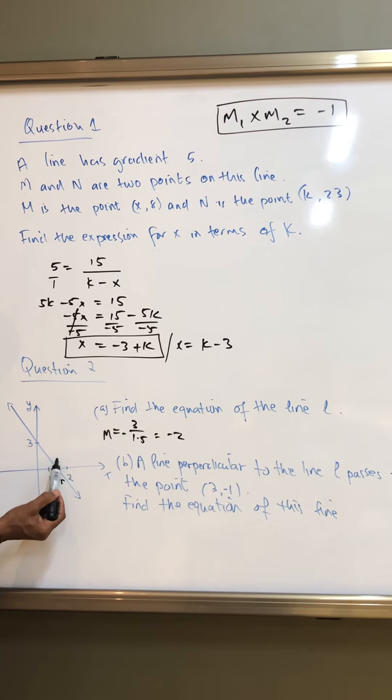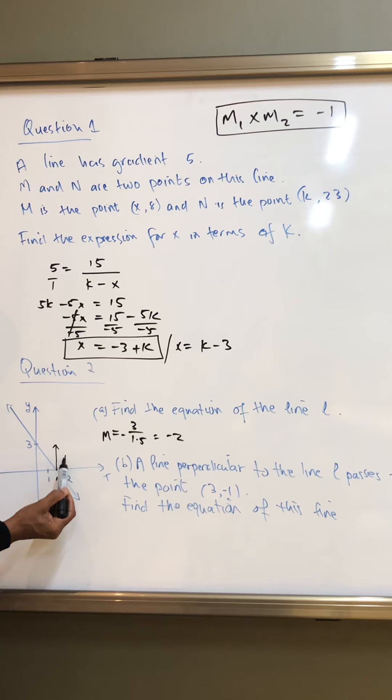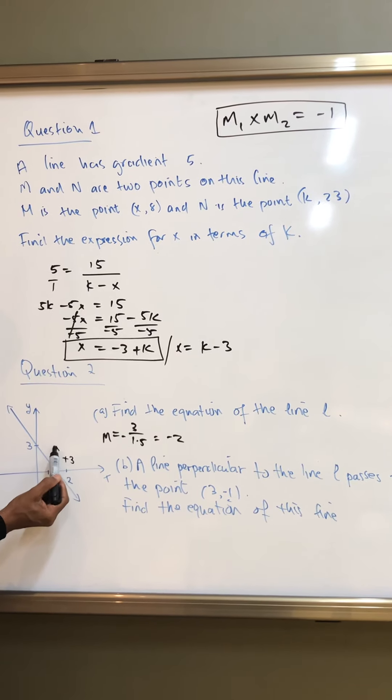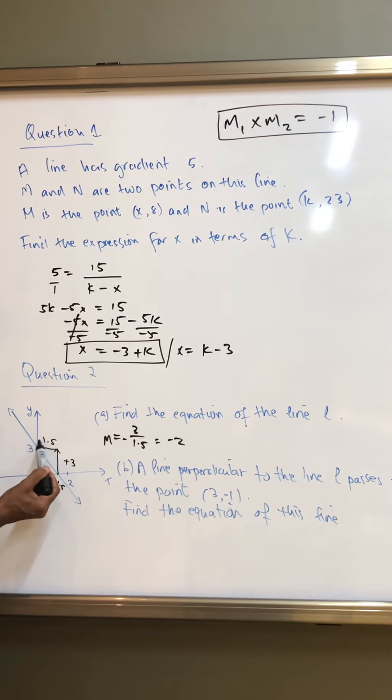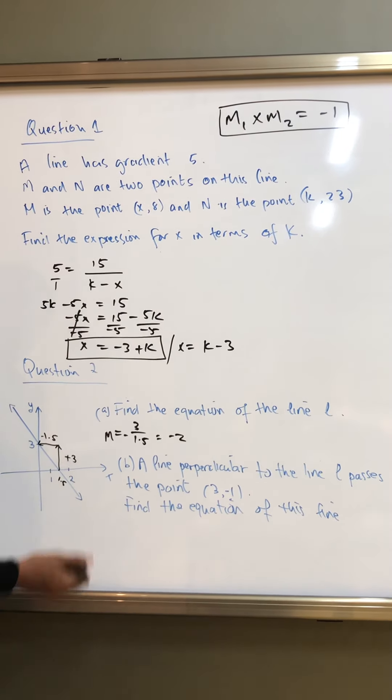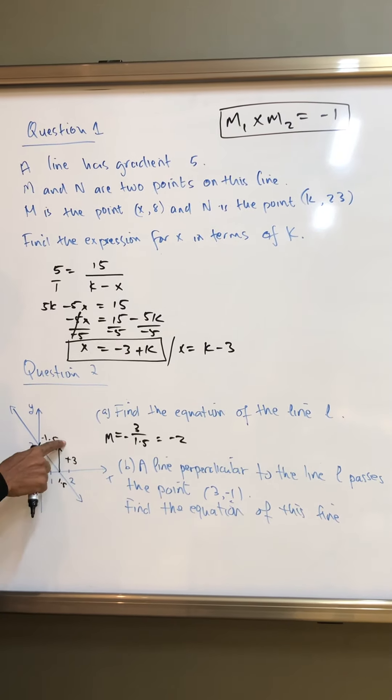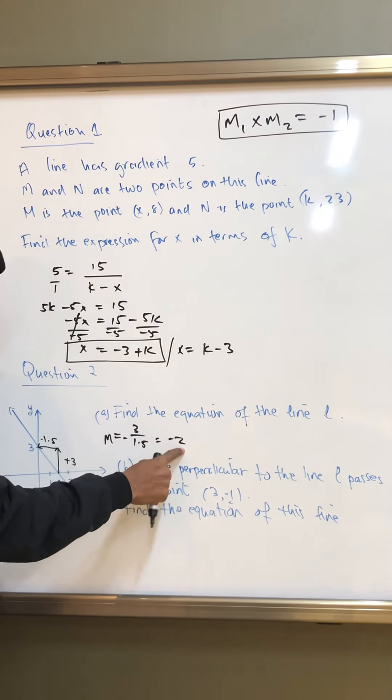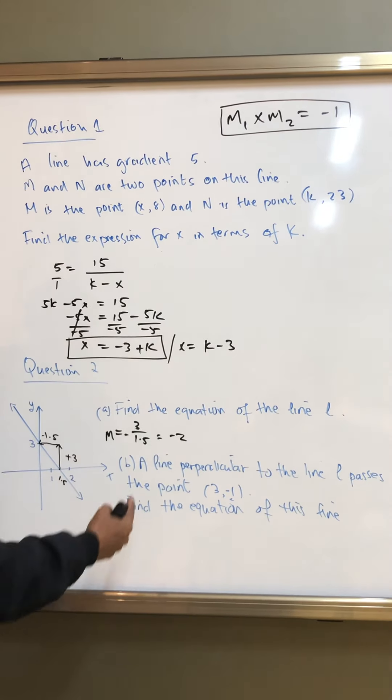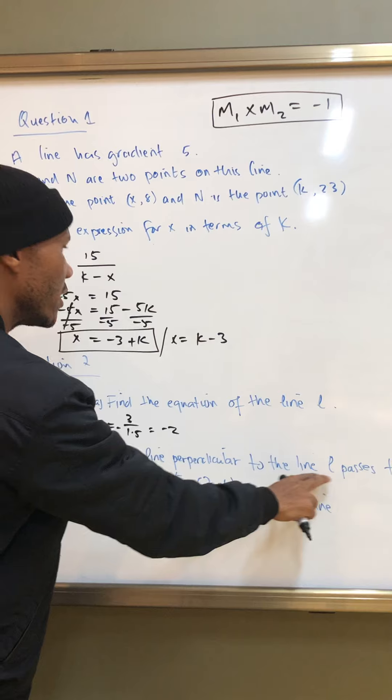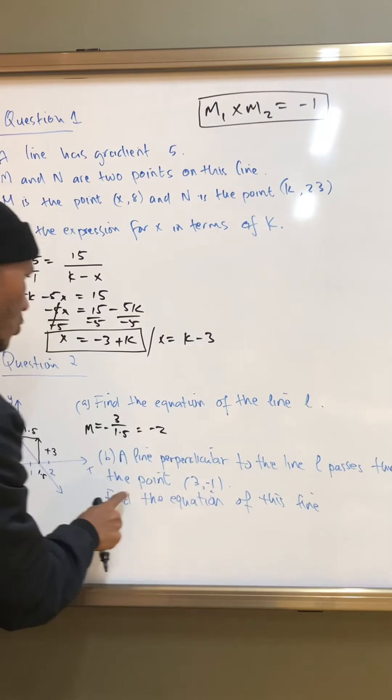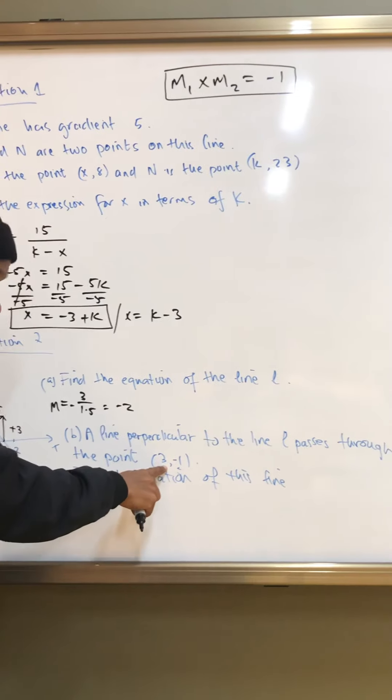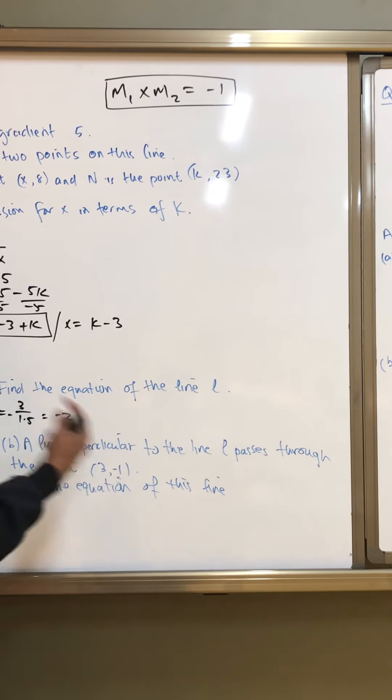So rise over run, you're rising 3 units up, positive 3, and you're running 1.5 units to the left, right? And 3 divided by 1.5 will give you negative 2. So that is my gradient. And on this one it says a line perpendicular to line L. So it's perpendicular to line L. Passes through the point. These are the points that it passes through. Then find the equation of that line.